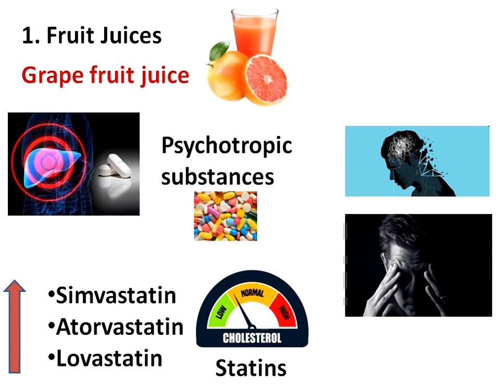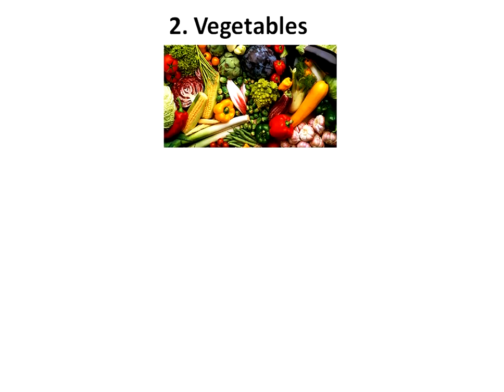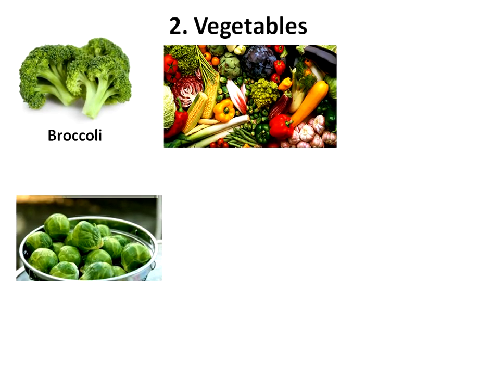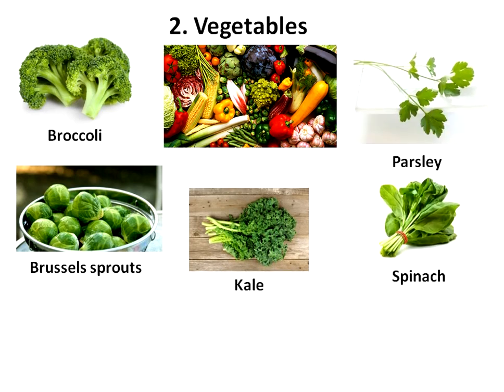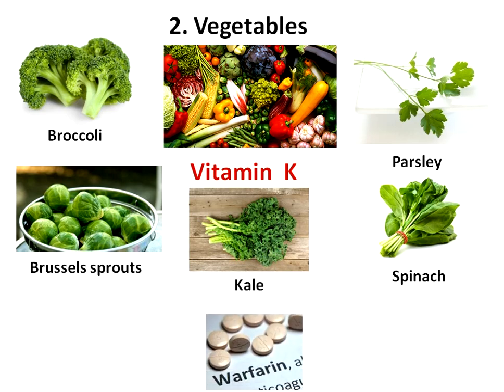Second, vegetables. Some vegetables — broccoli, Brussels sprouts, kale, parsley, spinach, and others — are high in vitamin K. Eating large quantities of, or making sudden changes in the amounts of, these vegetables interferes with the effectiveness and safety of warfarin therapy. Warfarin is an anticoagulant which reduces the formation of blood clots.